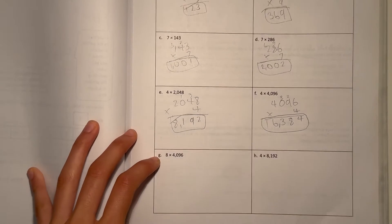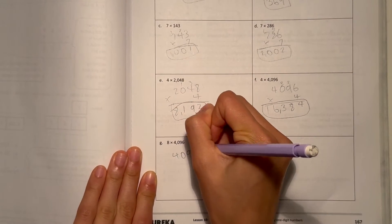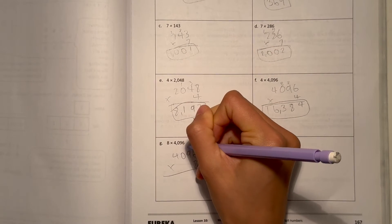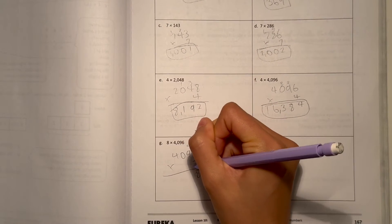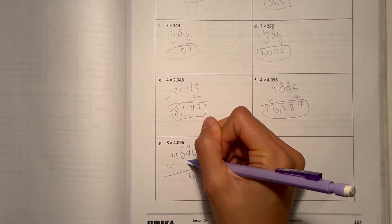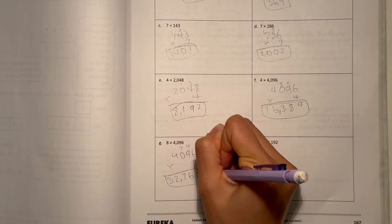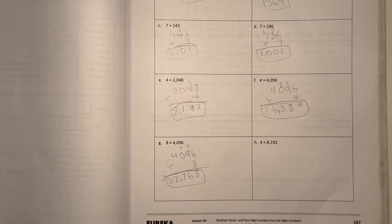Alright, and let's see. G, 4,096 times 8. 6 times 8 is 48. 9 times 8 is 72, plus 4 is 76. 0 times 8 is 0, plus 7 is 7. And 4 times 8 is 32. So 32,768.